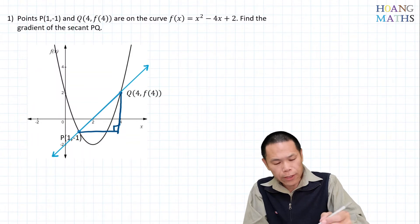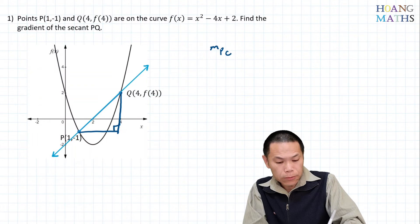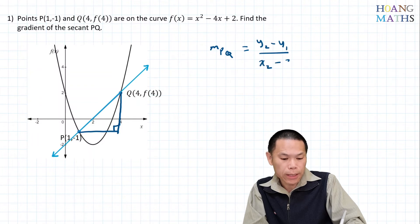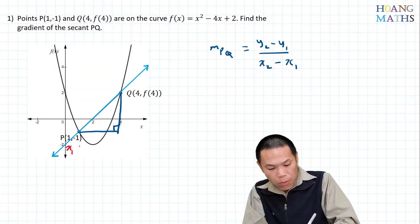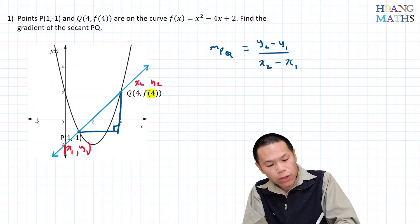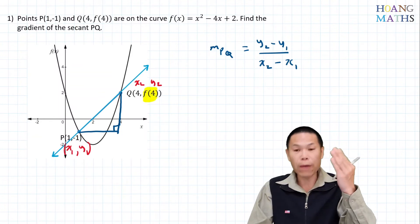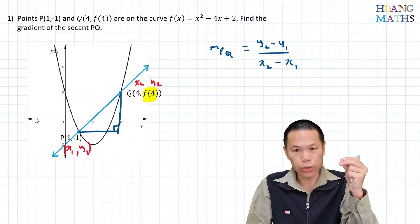We know this point here is (x₁, y₁) and this is (x₂, y₂). Please note that we haven't got y₂ yet - we have the x-coordinate for Q, but we need to find the y-coordinate for point Q first.